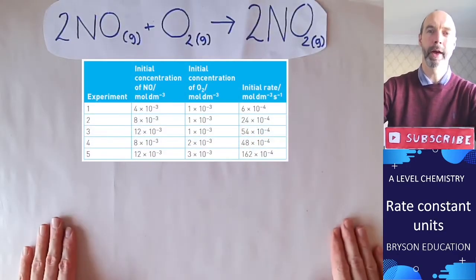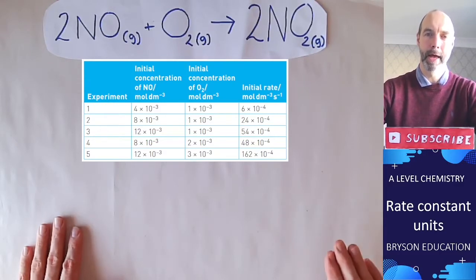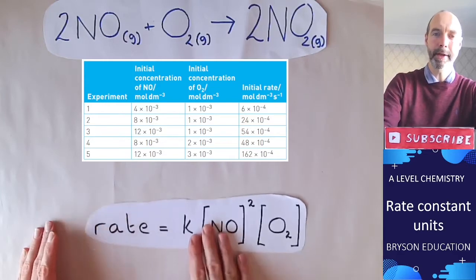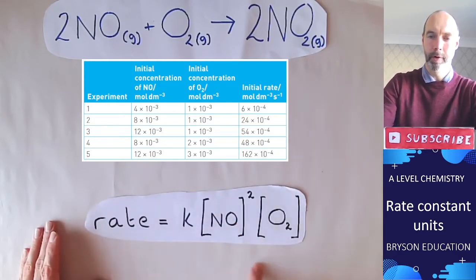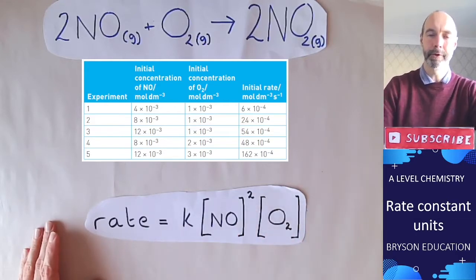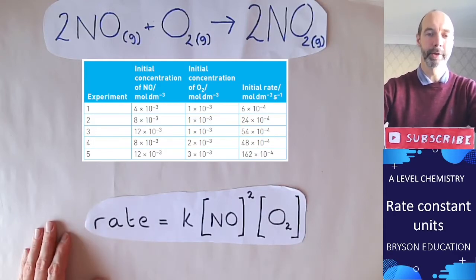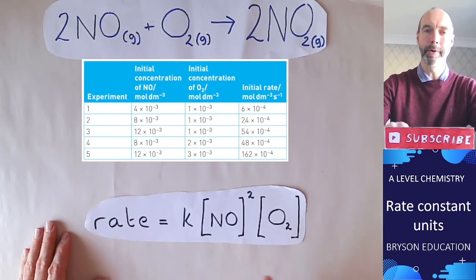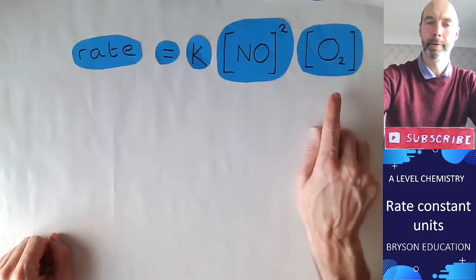We're going to look at an example now of how we determine a value for the rate constant k and how we can deduce the units for it. Using the experimental data here, we can work out the rate equation: it's second order with respect to NO and first order with respect to O2. Remember it's not as simple as just using the balanced equation; we do need to use that experimental data. We have our rate equation, so we need to rearrange this to get k equals.